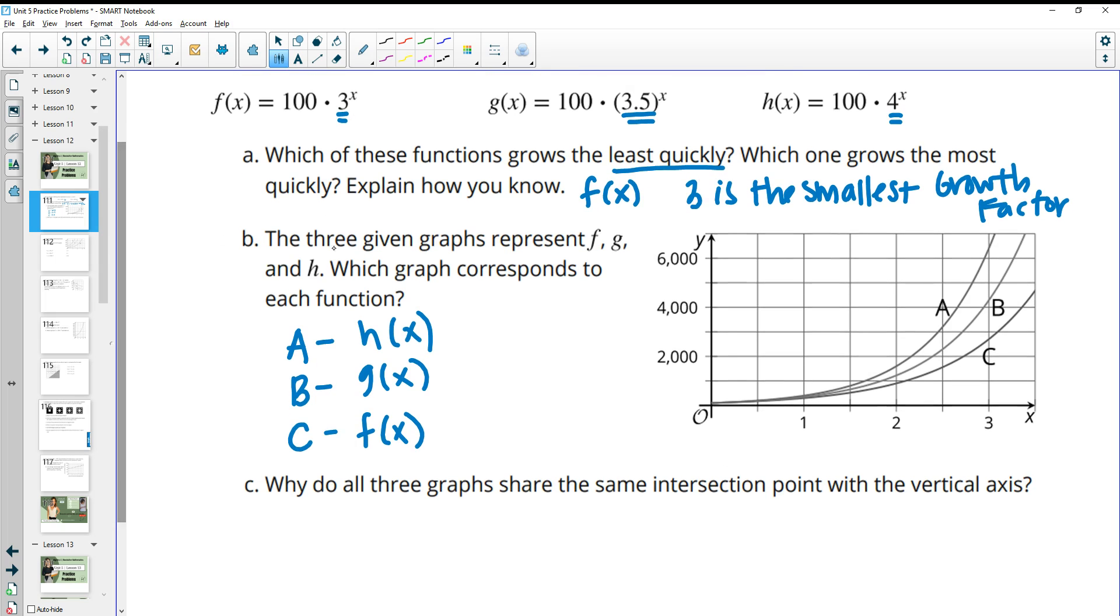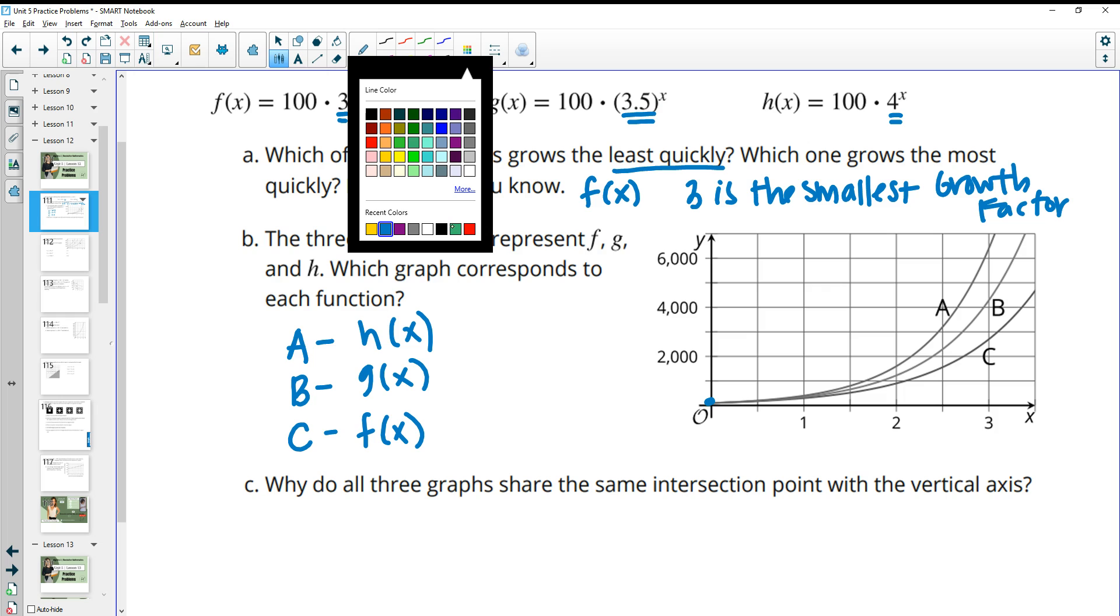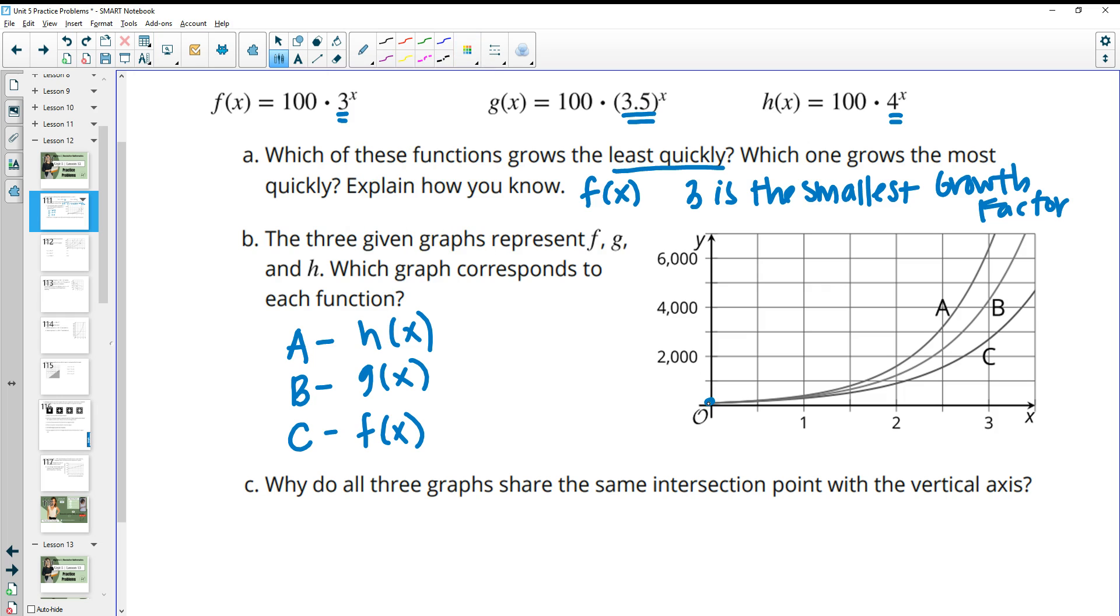Why do all of these graphs have the same intersection point on the vertical axis? That's because we've got the same initial value. They all have 100 in here, so they all start at the same initial value.